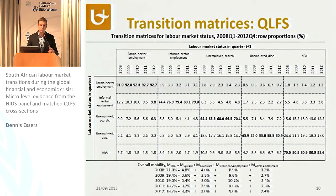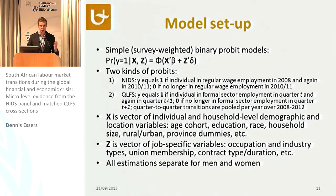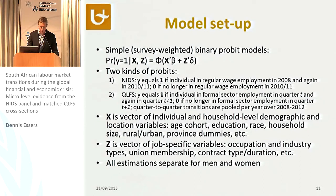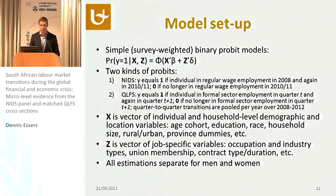This technique can be used to look at other transitions too, but to focus on downward mobility I take only those individuals. For the QLFS, it is very similar, but we look at formal sector employment and transitions from one quarter to the next, pooling quarter-to-quarter transitions over years to see whether there has been any evolution in factors influencing downward mobility. My explanatory variables include individual and household-level demographic and locational variables — the standard variables also used in cross-sectional studies — plus a number of job-specific variables: occupation types, industry types, union membership, and contract types and durations. All estimations are done separately for men and women.